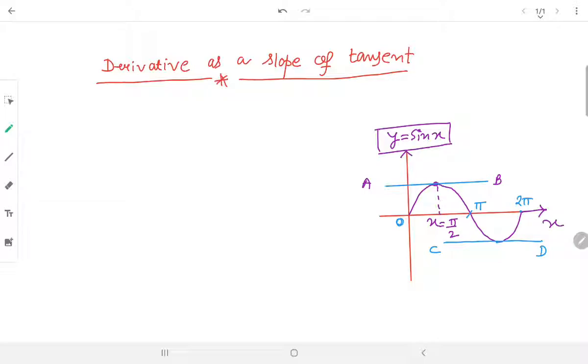Now, I have drawn two tangents. Look at here. One tangent is AB. This is our tangent. Second tangent is CD. First tangent is AB and second tangent is CD.